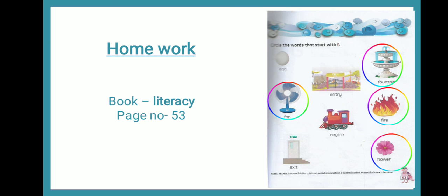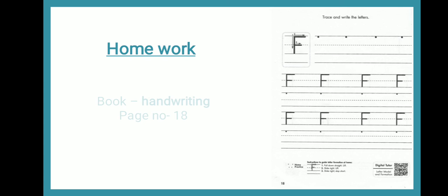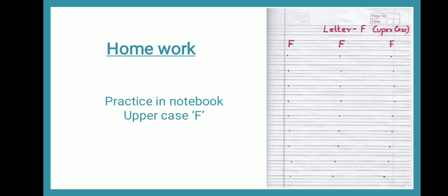So kids, this is your literacy book and this exercise is on page number 53. You have to find out the words that start from letter F and then circle them. Now kids, this is your homework — you will get this sheet on page number 18. In this sheet, you have to practice writing letter F, and this is your handwriting book. Then please take out your English notebook and practice writing letter F.